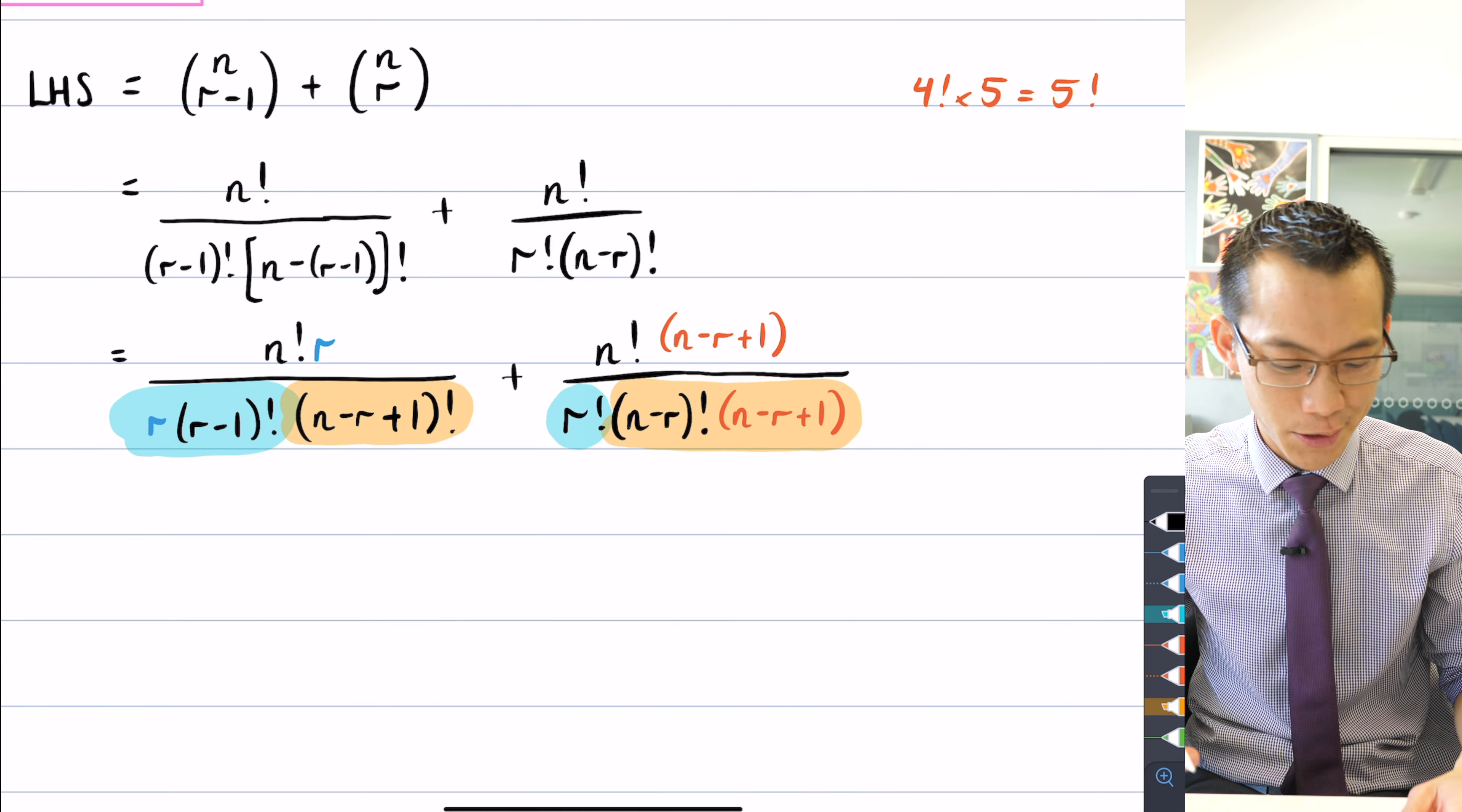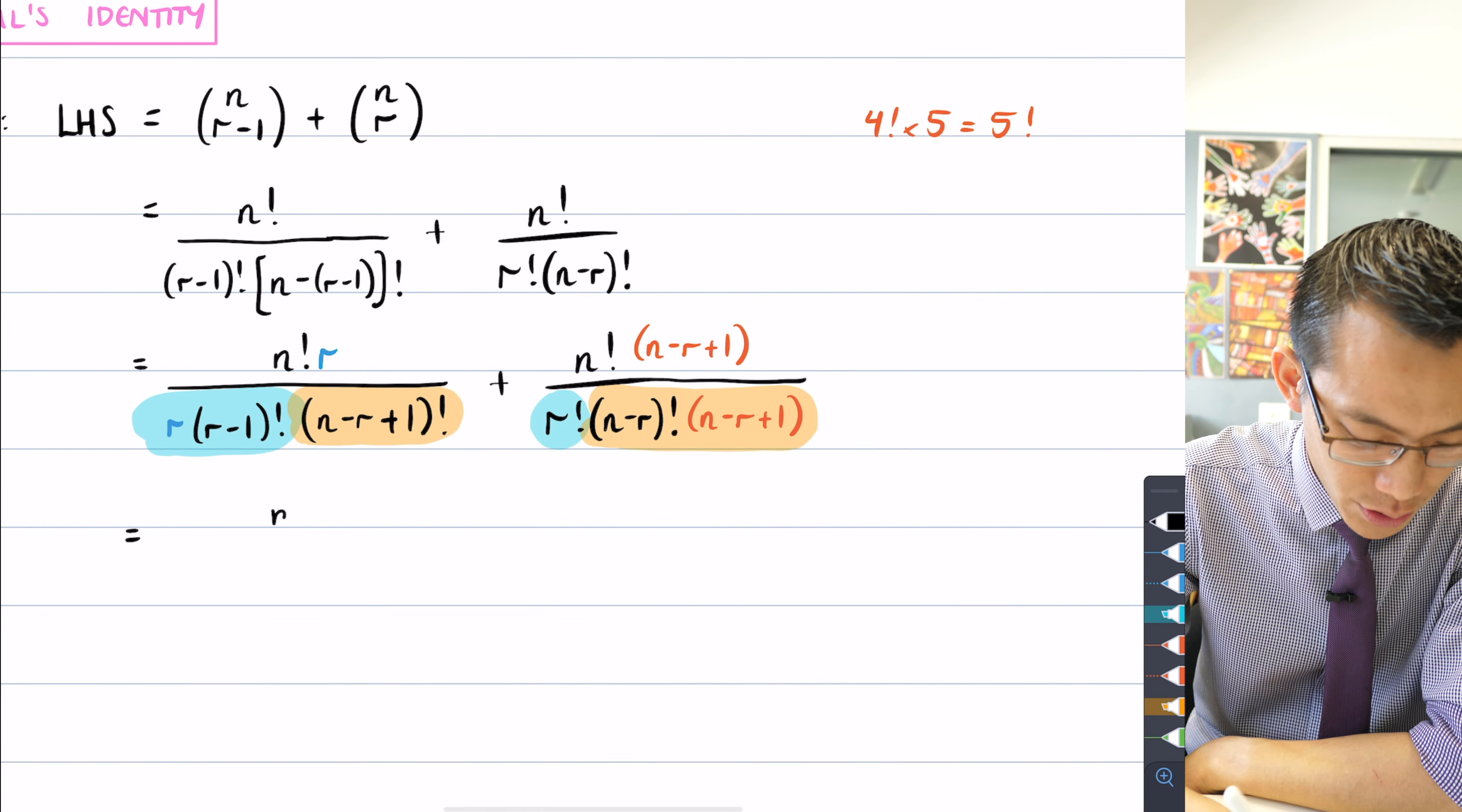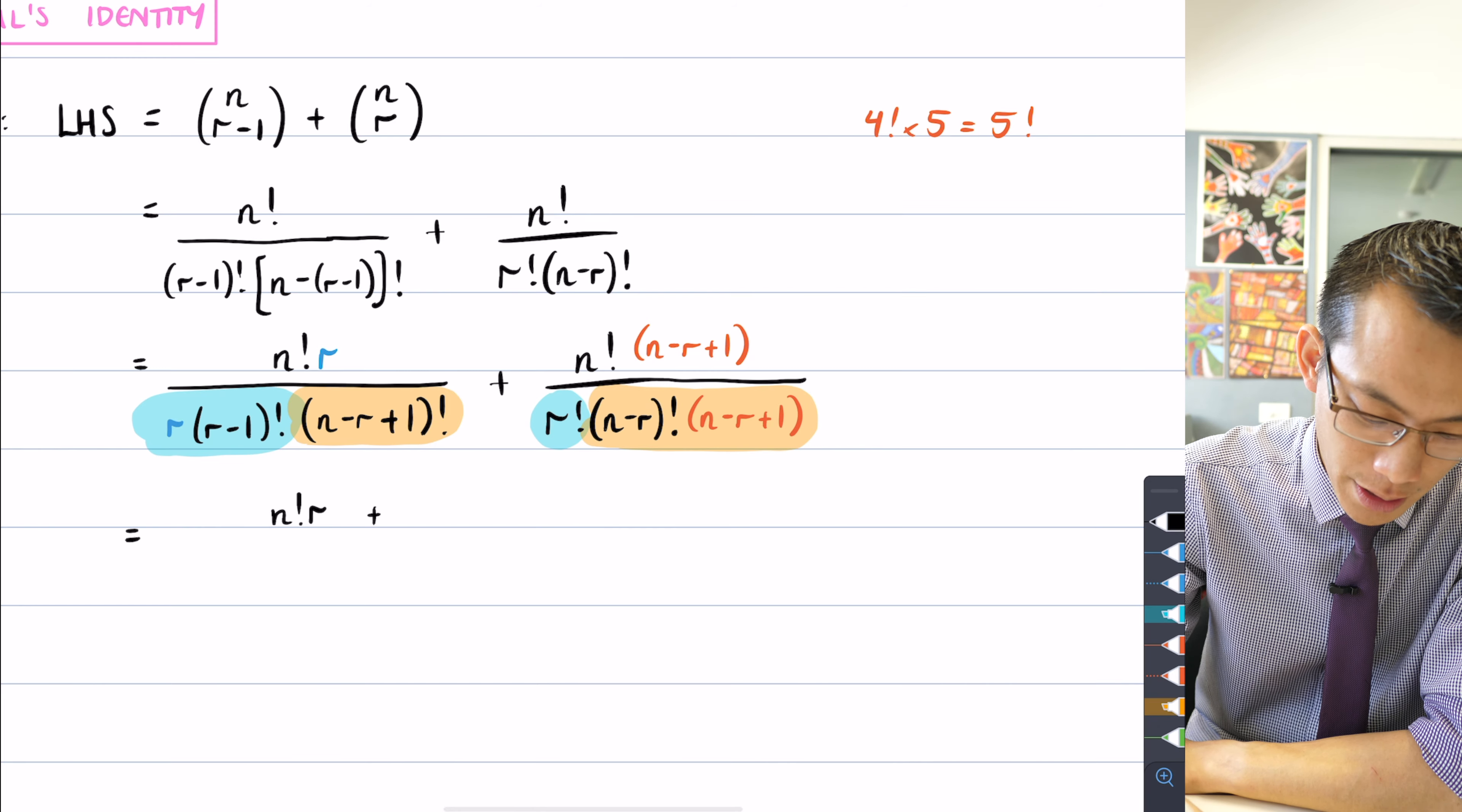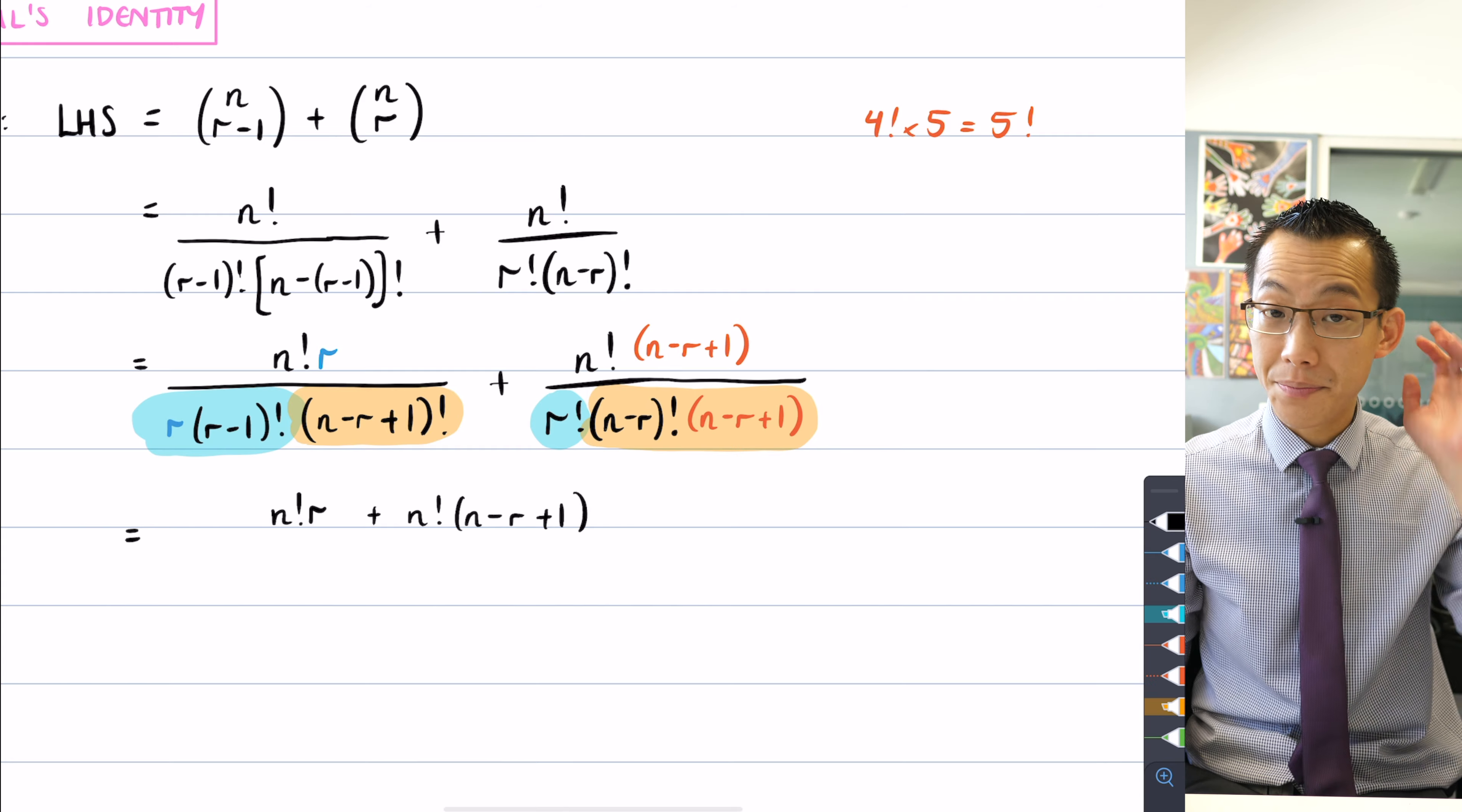What's going to happen when I put all of this together? Well, the left-hand fraction, it's going to contribute n factorial r and then the right-hand fraction is going to give me n factorial n minus r plus one. Now, so far so good, that's the numerator,